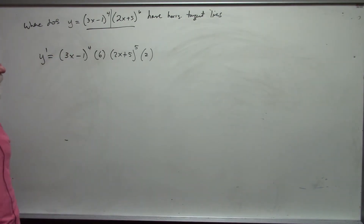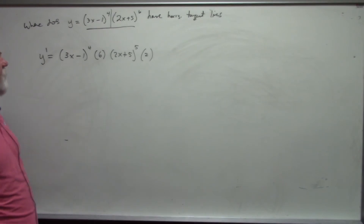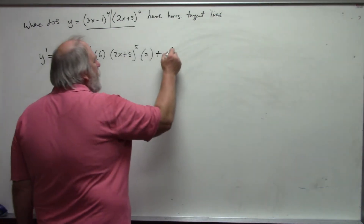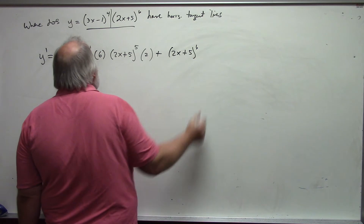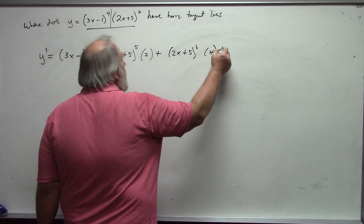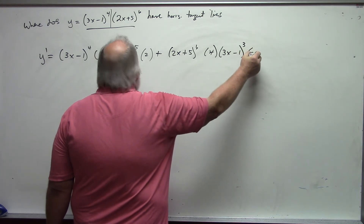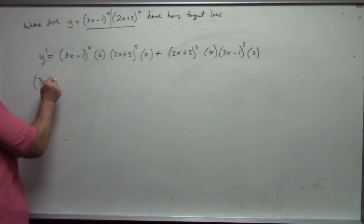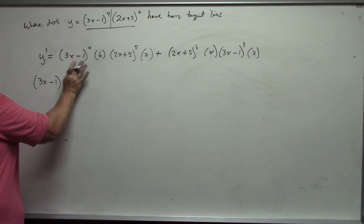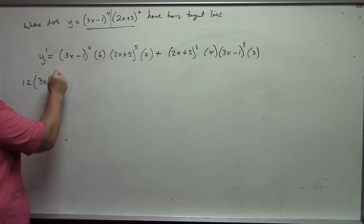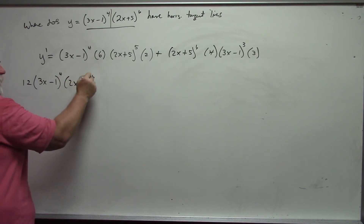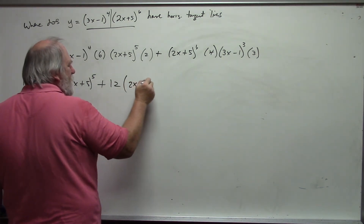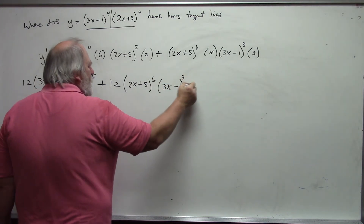Plus second times the derivative of the first, which by the chain rule is 4 times 3x minus 1 cubed times 3. Now I want to know where this equals zero. Combining, I have 12 times 3x minus 1 to the 4th times 2x plus 5 to the 5th plus 12 times 2x plus 5 to the 6th times 3x minus 1 cubed equals zero.